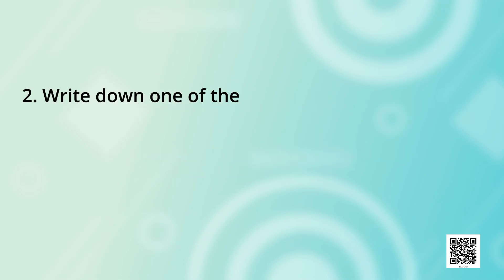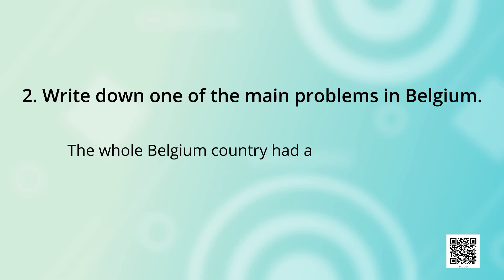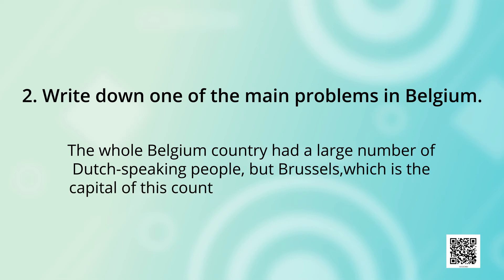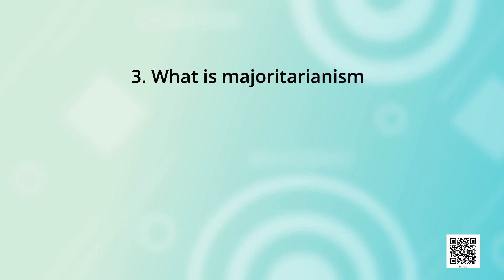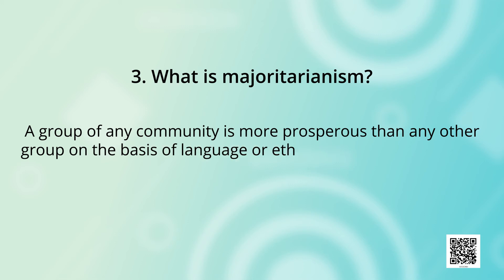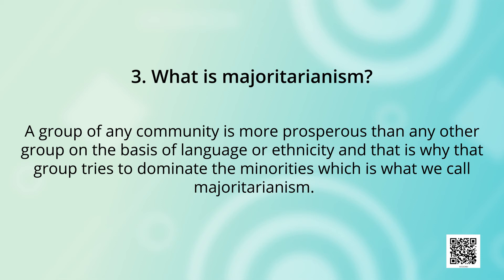Question 2: Write down one of the main problems in Belgium. Answer: The whole Belgium country had a large number of Dutch-speaking people, but Brussels, which is the capital, had a Dutch minority there. Question 3: What is Majoritarianism? Answer: A group of any community that is more prosperous than any other group on the basis of language or ethnicity tries to dominate the minorities. This is what we call Majoritarianism.